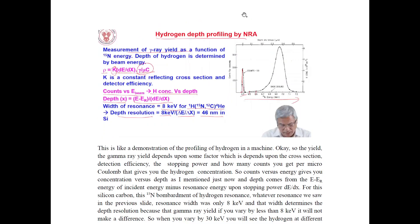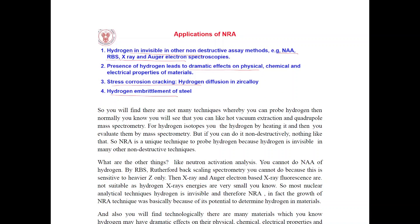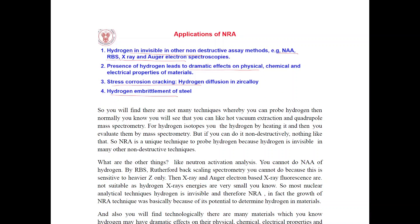He talked about hydrogen depth profiling, which is the measurement of gamma ray yield as a function of 15N energy. The depth of hydrogen is determined by beam energy: rho equals K times dE/dx minus gamma over mu times c, where K is the constant reflecting cross section and detector efficiency. Counts versus beam energy gives H concentration versus depth, where depth equals (E minus Er) divided by dE/dx. The width of the resonance is 8 keV, giving a depth resolution of 46 nanometers in silicon.